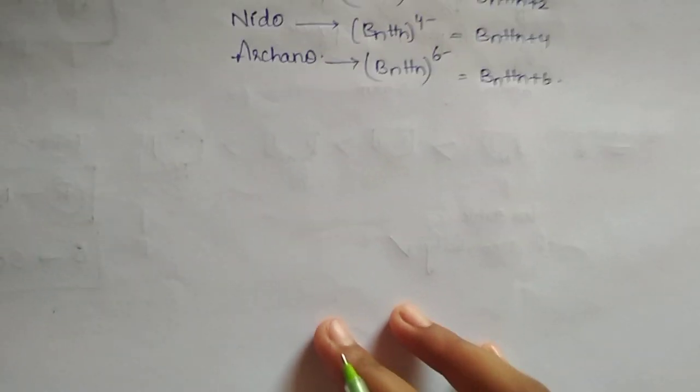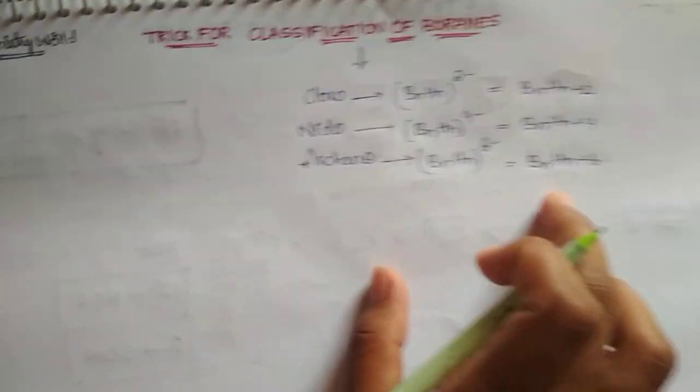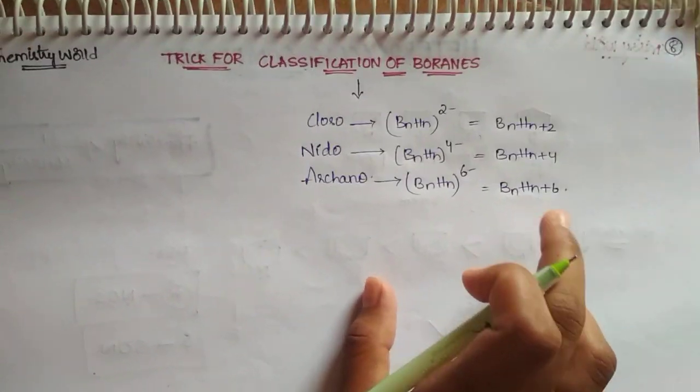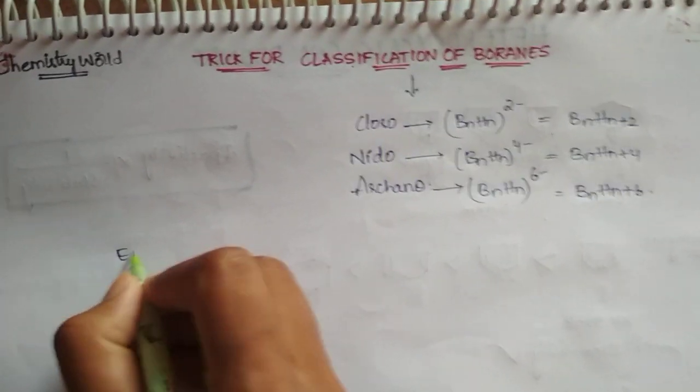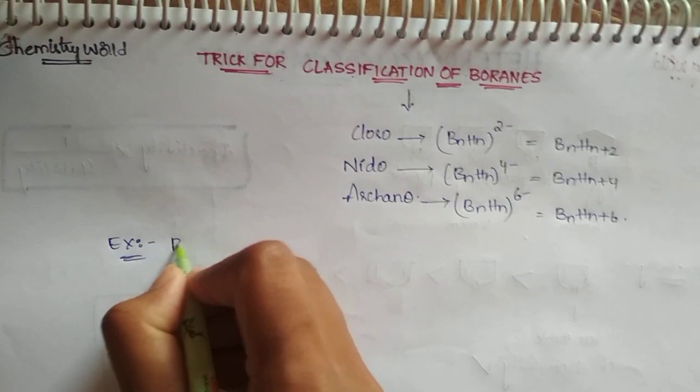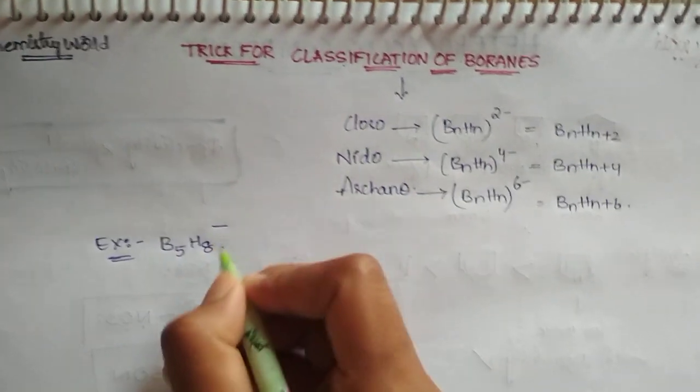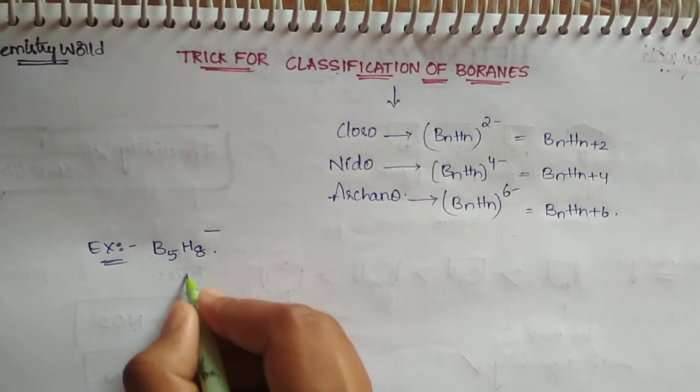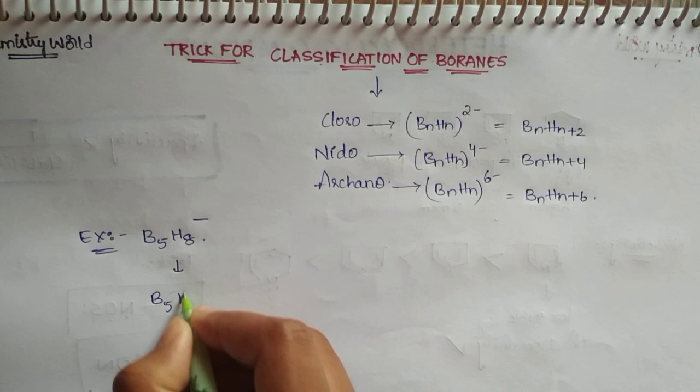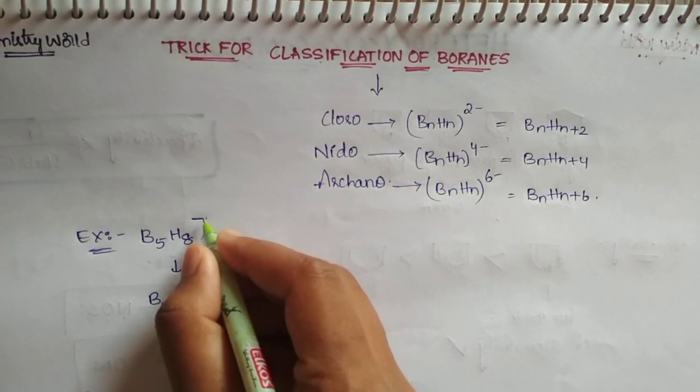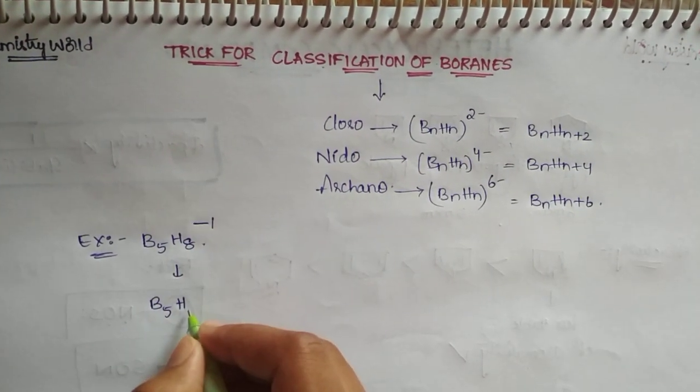Now let us consider an example which will give you better understanding. For example, B5 H8 minus. So how can we write this? B5 H8, when minus 1 becomes positive, what will become? 8 plus 1, right?